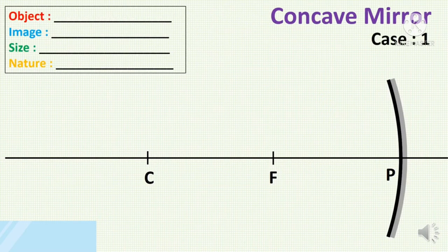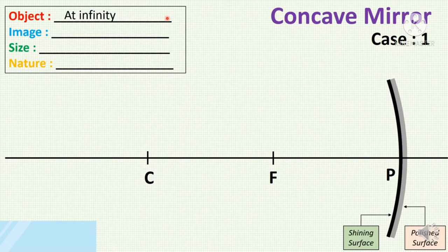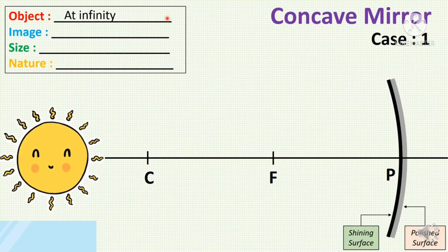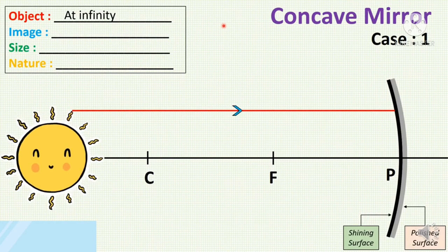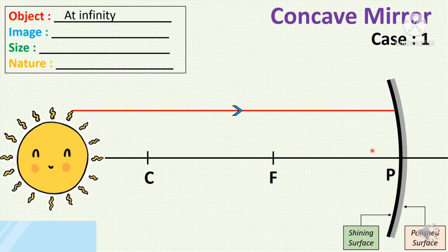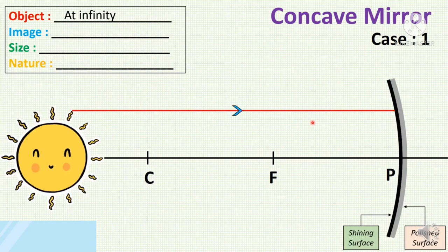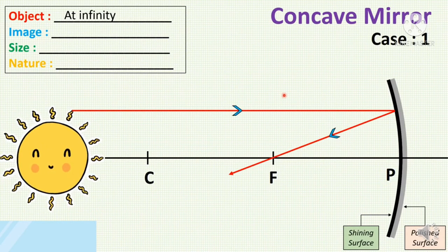First case: when the object is at infinity. Consider the sun, which is at infinity distance. Consider two different rays coming from infinity — we assume the rays are parallel to the principal axis. The ray parallel to the principal axis, after reflection from the mirror, passes through the focus. If any ray is parallel to the principal axis, after reflection from the mirror, it passes through the focus.